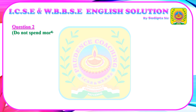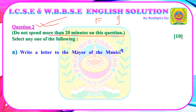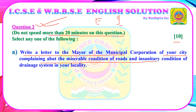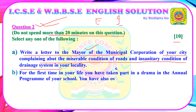Question 2. Do not spend more than 20 minutes on this question. This question is about letter writing. Two options will be given — one formal letter and one informal letter — and you need to answer either one for 10 marks. Option A: Write a formal letter to the mayor of the municipal corporation of your city complaining about the miserable condition of the roads and the insanitary condition of the drainage system in your locality. On behalf of the local people, mention the problems and also include suggestions and solutions.